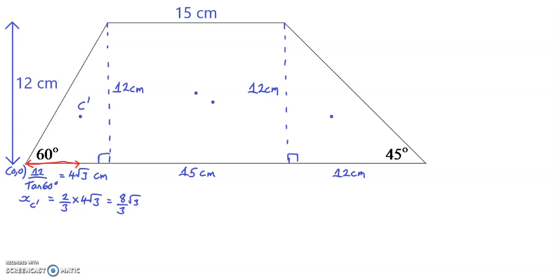Similarly, the y coordinate of the centroid of a right angle triangle is one third of the vertical height of the triangle. So yC dashed equals one third times the vertical height, which is 12, which equals 4. So the coordinates of the centroid of the left hand right angle triangle are (8 root 3 over 3, 4).